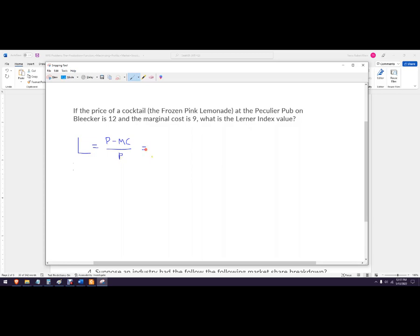So in this case, we know that the price is 12 and we know that the marginal cost is 9. So this is 3 and so this is one-fourth or that could also be expressed as 0.25.